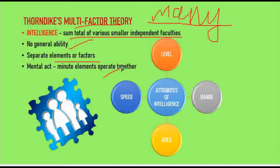Here we are talking about a mental act and four attributes of intelligence. The first attribute is Level. Level refers to the level of difficulty of the tasks a person can perform.